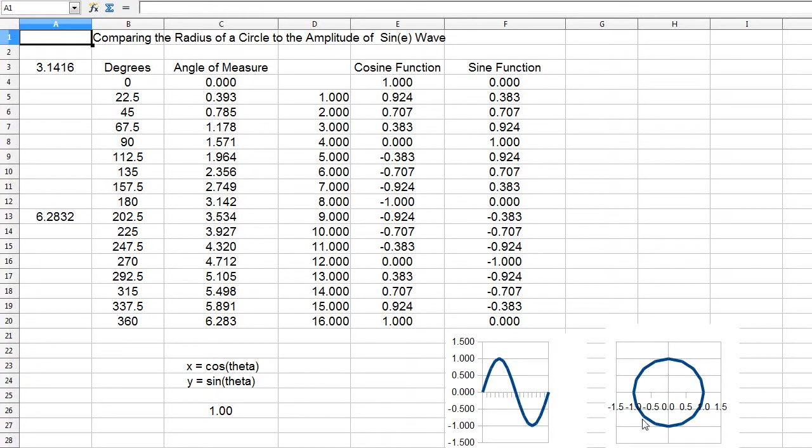Now what I'm doing is actually plotting a circle as well based upon the cosine and sine values. That gives us the x and y values around the circle and that's how I'm able to plot it.